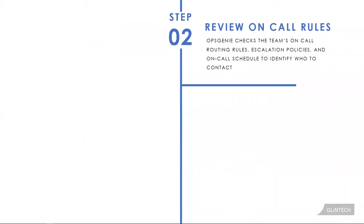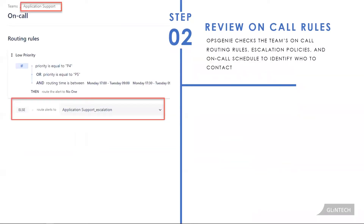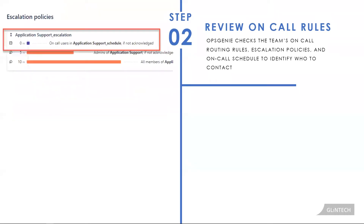Opsgenie is going to review your team's on-call rules and identify what to do with the alert. In this particular case, the alert is P3 — it doesn't meet the first criteria of silencing P4 and P5 alerts during non-business hours. So the alert is told to follow the escalation path that the team has defined.